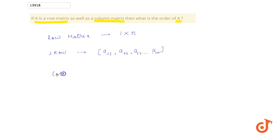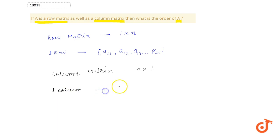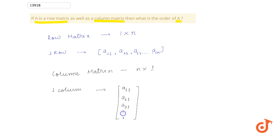Whereas a column matrix has the order of n cross 1. n cross 1 means it has just one column. This will be A11, A21, A31 — n rows but only one column — going up to An1.